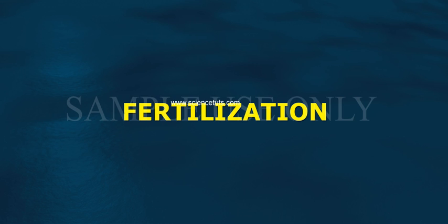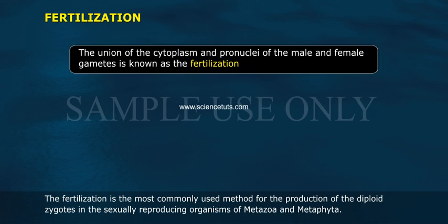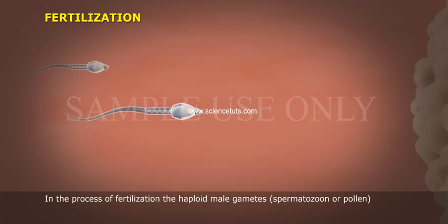Fertilization. The union of cytoplasm and pronuclei of the male and female gametes is known as fertilization. It is the most commonly used method for the production of diploid zygotes in sexually reproducing organisms of Metazoa and Metaphyta.